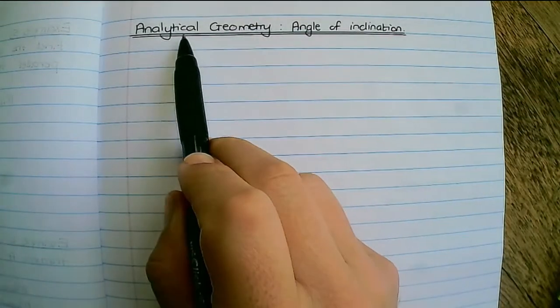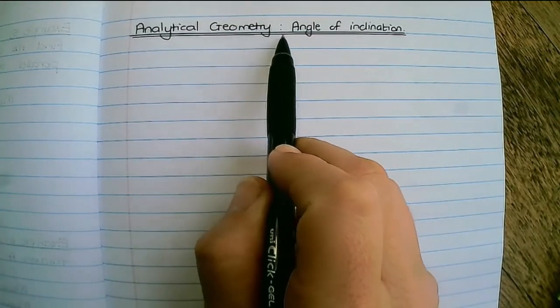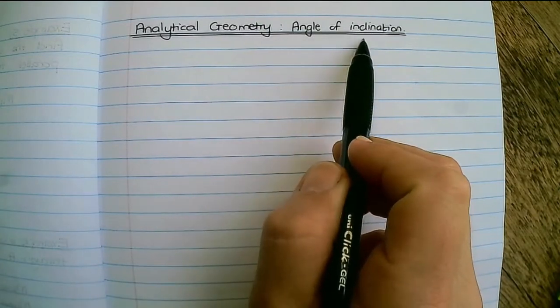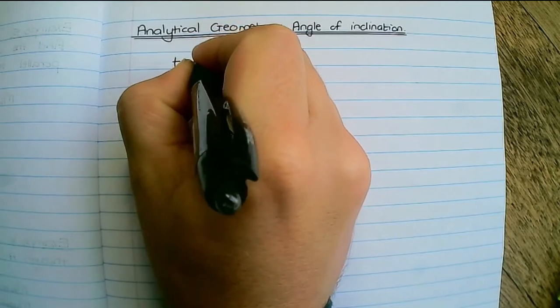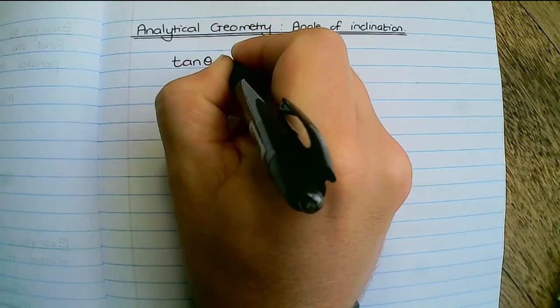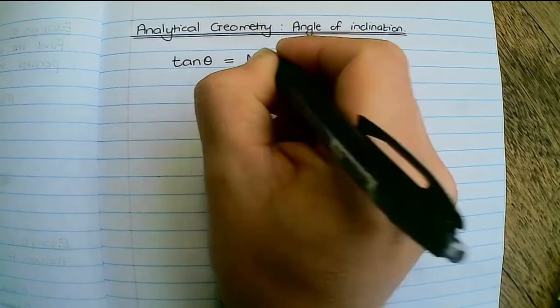In this video we'll continue with analytical geometry and we move to the angle of inclination. What I will show you is that the tan of theta is equal to the gradient of a line.